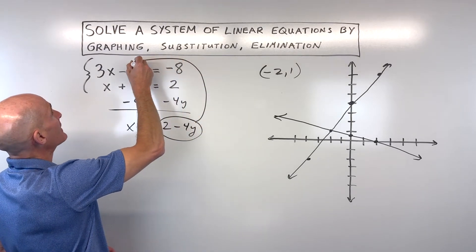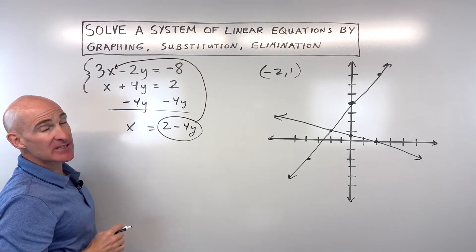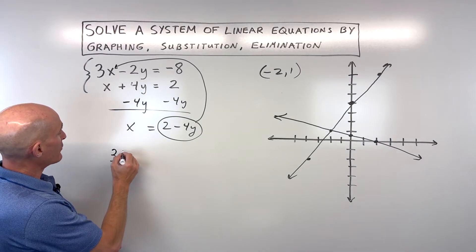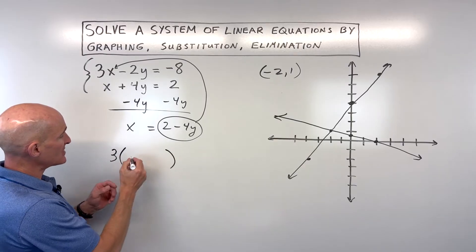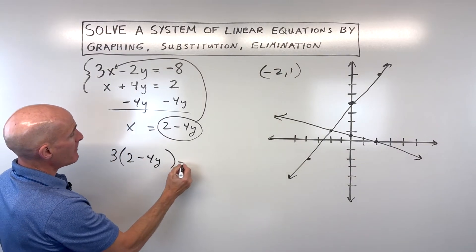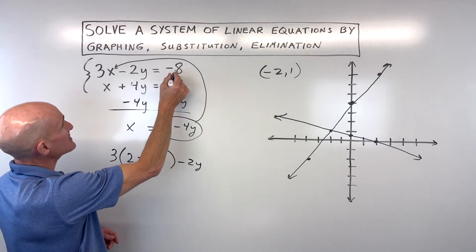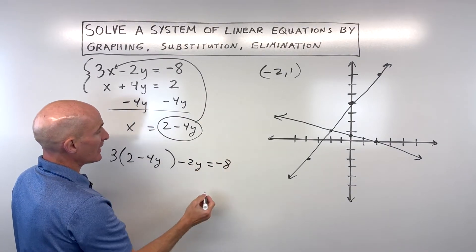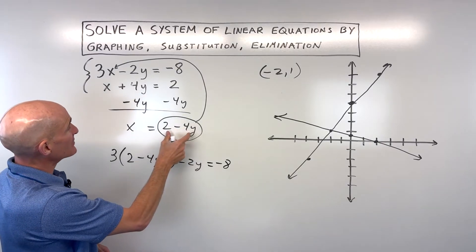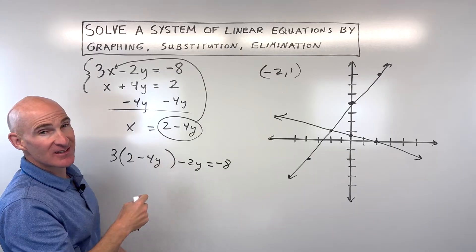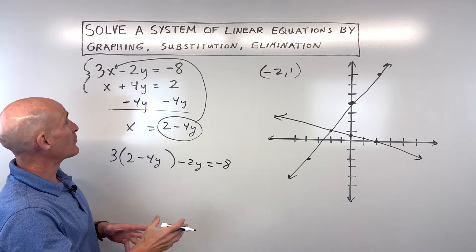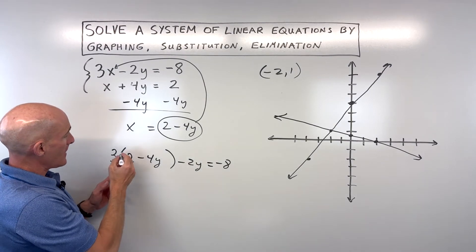We can put that or substitute that in place of x in the other equation that we haven't used yet. So, let's go ahead and do that. We have 3, whenever you do a substitution, I like to put parentheses, that whole quantity, in place of x, minus 2y is equal to negative 8. Now, sometimes a simple mistake that students sometimes make is they take this 2 minus 4y and they put it back into the same equation that they were using here originally, which you want to put it into the other equation that you haven't used.